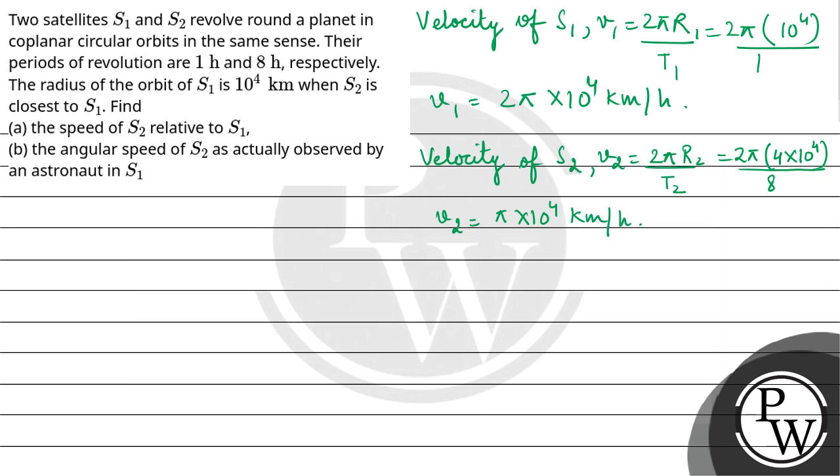For the first part, the speed of S2 relative to S1 is V2 - V1 = π × 10^4 - 2π × 10^4 = -π × 10^4 km/h.